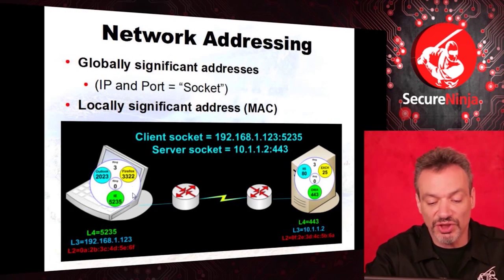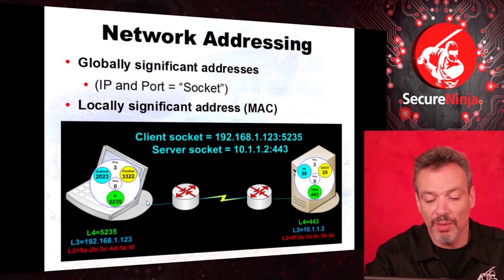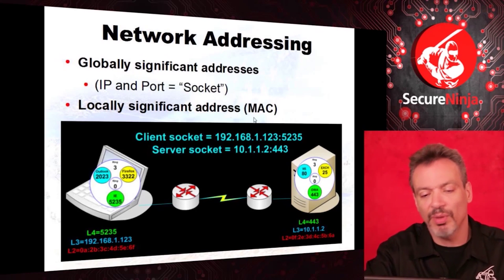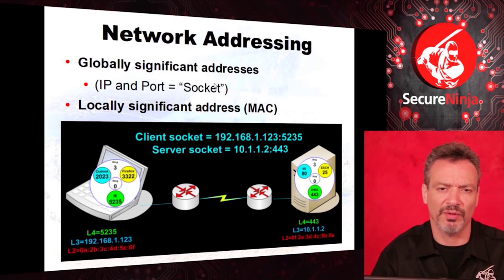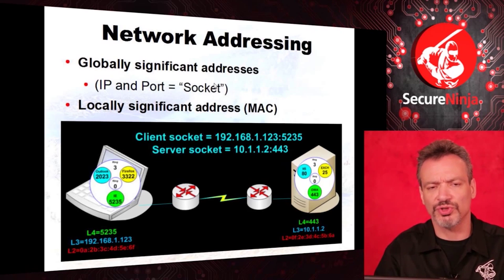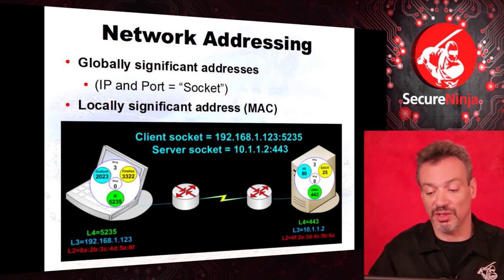This client talking to this server — the source MAC address at layer 2 (the locally significant address) would be his workstation, but the destination would be the router. That router is going to strip off that frame header, rebuild it with new source and destination MAC addresses. But our firewalls don't typically care about that because it's stripped off at every router hop. So most firewall rules start at layer 3 — do I let this IP? Then port. And then you start looking deeper.